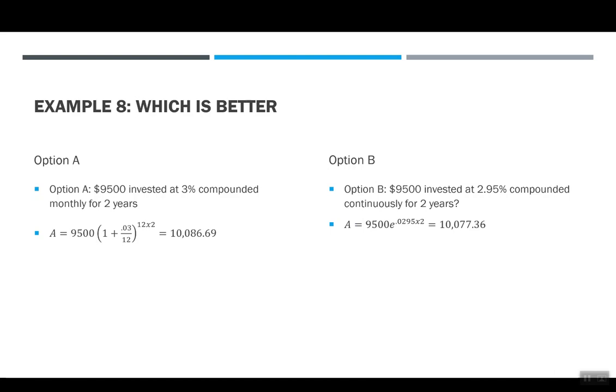In option B, we're using our A equals Pe to the RT formula. So I have $9,500. I have E and then to the power of .0295 times 2. This gave me $10,077.36. It's important to note when you hit that E button in your calculator, it should come up with a parentheses. If it doesn't come up with a parentheses, then you want to put the .0295 times 2 in parentheses or multiply that out before you use the formula. Just like before, we want to compare these two numbers and see which one is better. Again, bigger number means better investment. So I can see the $10,086 is more than $10,077. So in this case, option A was better.